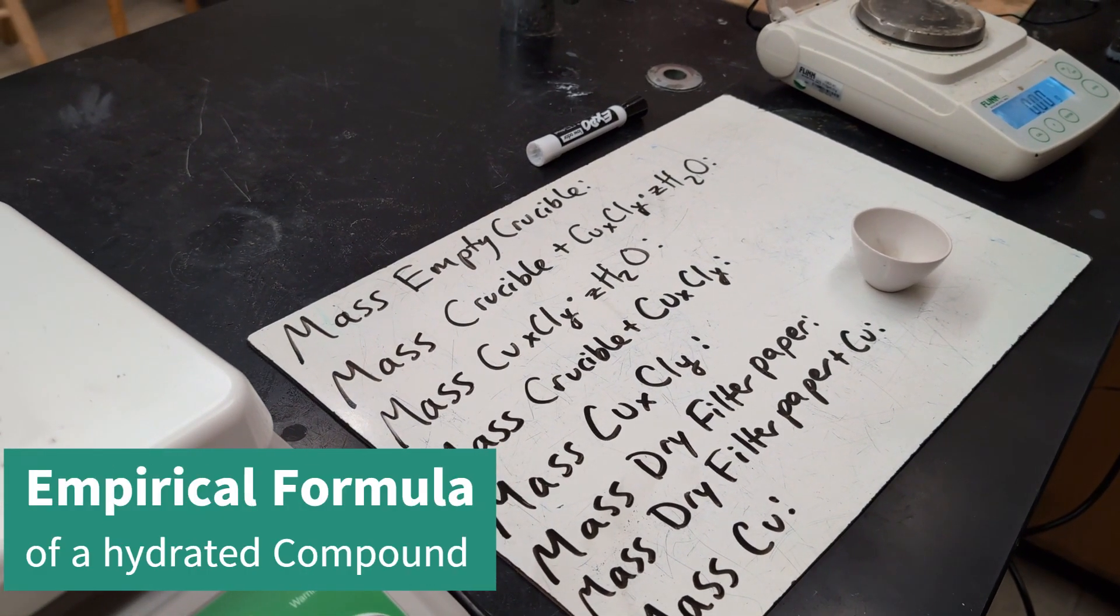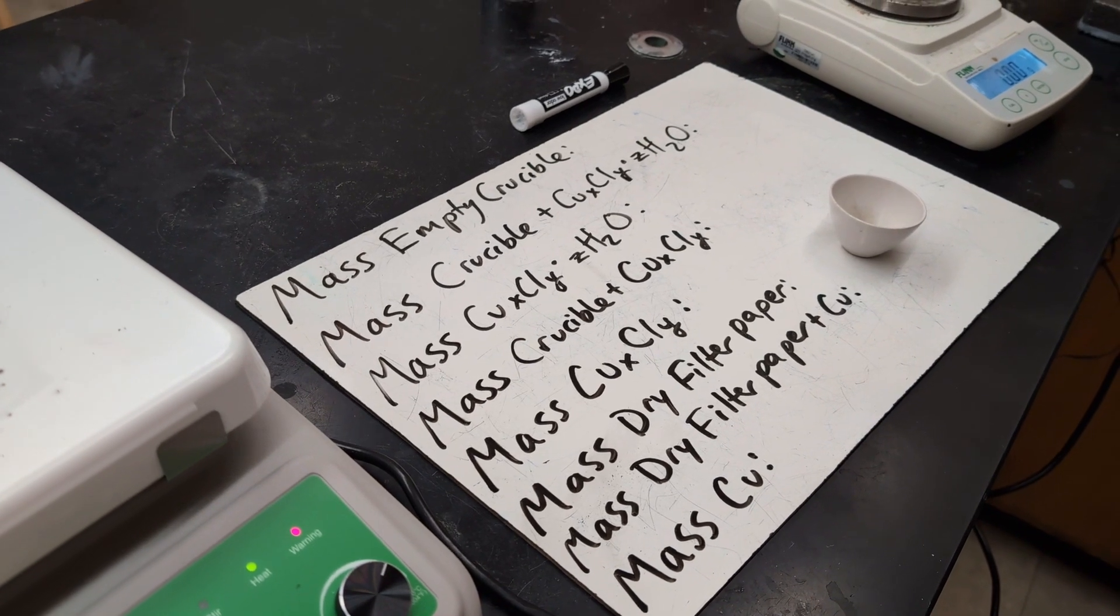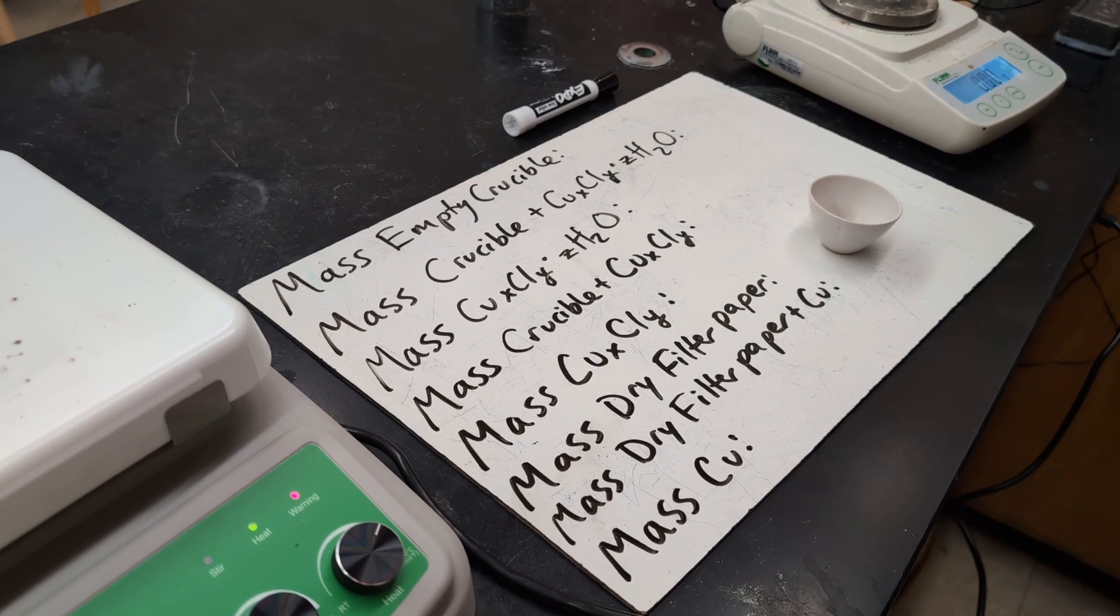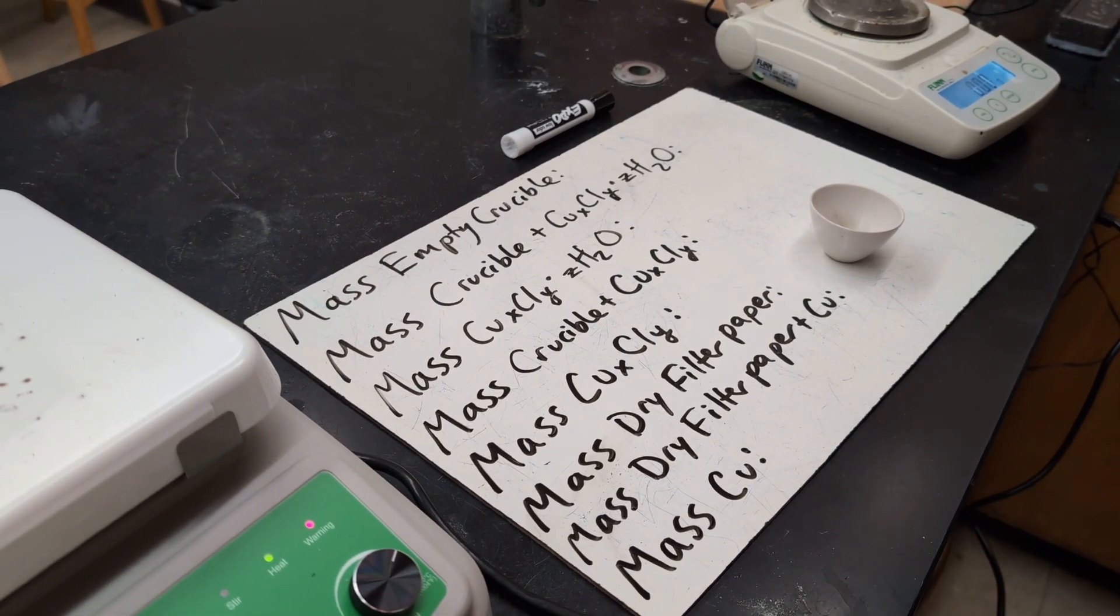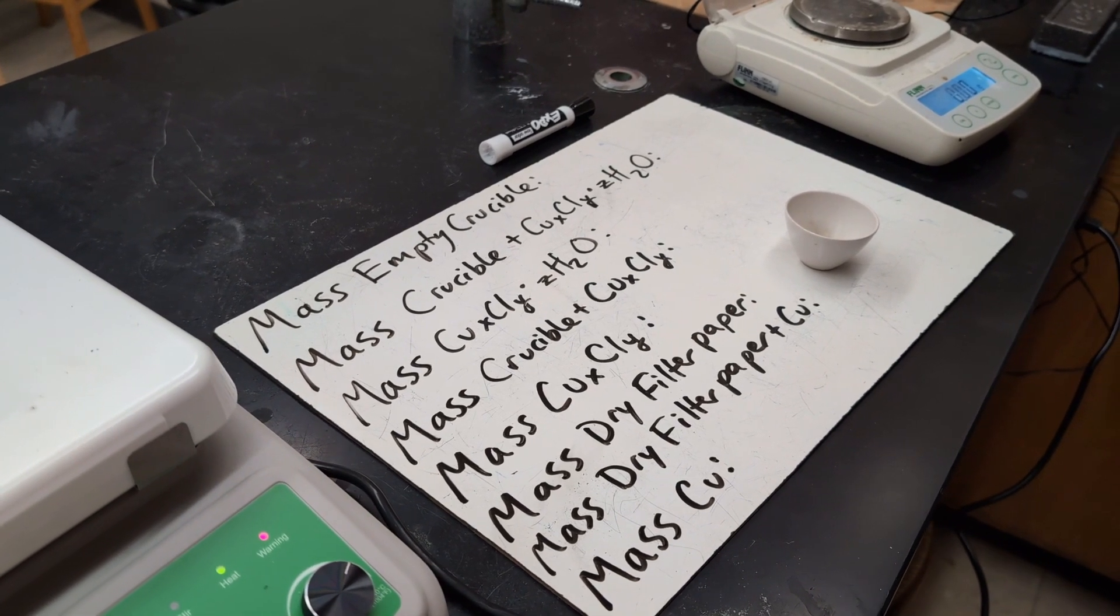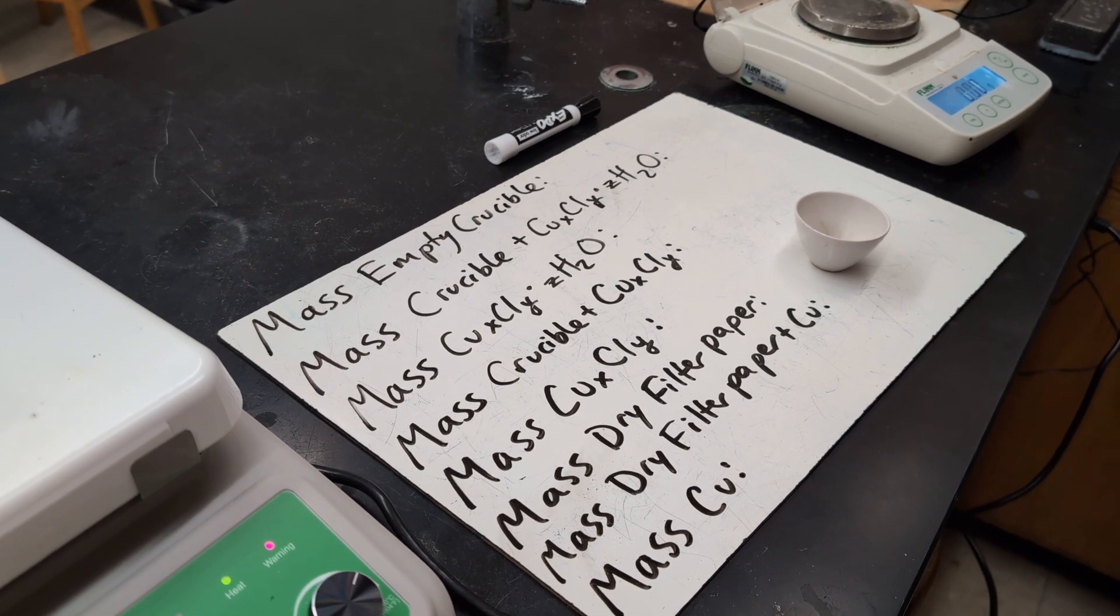Today we're going to be doing an empirical formula lab where we're finding the empirical formula of an unknown copper chloride compound with an unknown amount of waters of hydration. This one goes along better with unit 4 because it involves a chemical reaction in order to separate the copper and the chlorine.